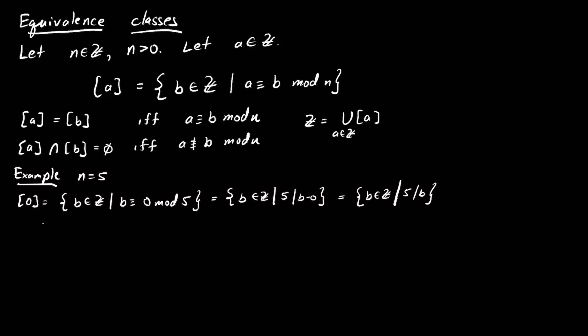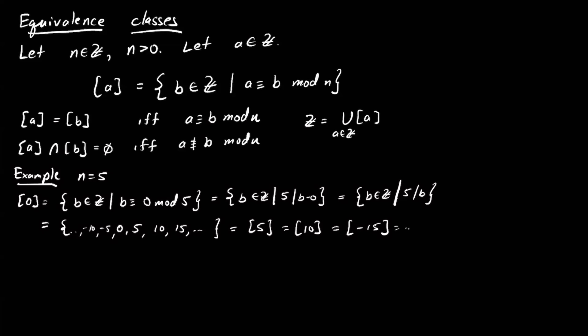So we could write out what these look like: 0, 5, 10, 15, and so on — it's going to be an infinite set — negative 5, negative 10, and so forth. One thing we know is that this is the same as the equivalence class of 5, the same as the equivalence class of 10, and the same as the equivalence class of negative 15. There are infinitely many ways of representing this set. If I choose any multiple of 5, I produce the same set — this follows from the property we discussed.